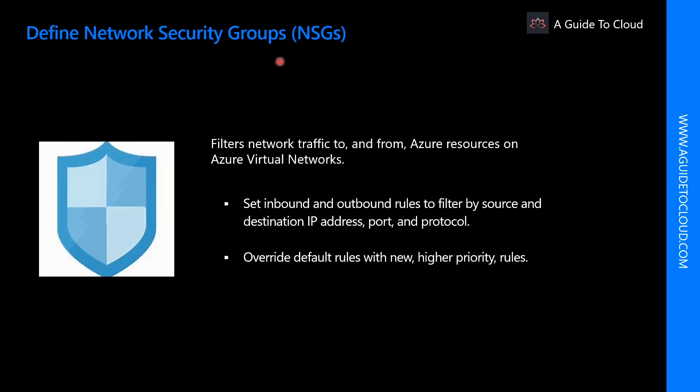Let's understand Network Security Groups, or NSGs. Network Security Groups allow you to filter network traffic to and from Azure resources in an Azure Virtual Network. An NSG can contain multiple inbound and outbound security rules that enable you to filter traffic to and from resources by source and destination IP address, port, and protocol.